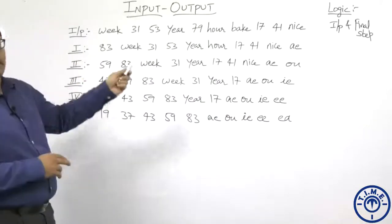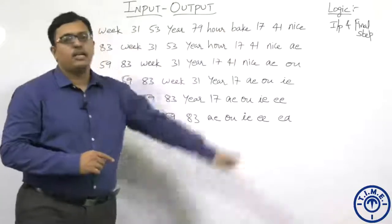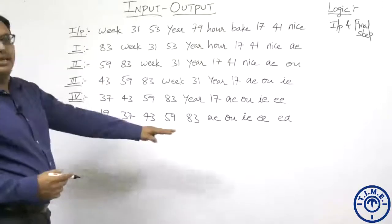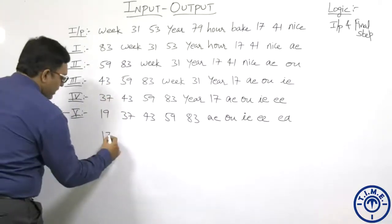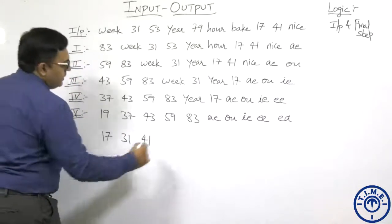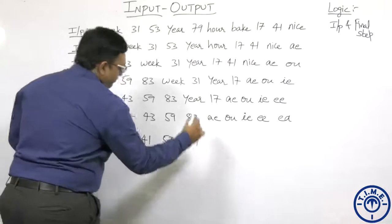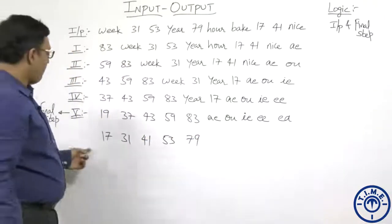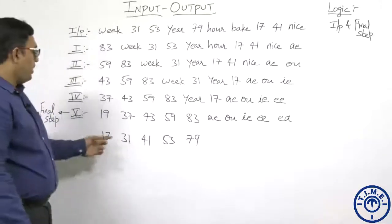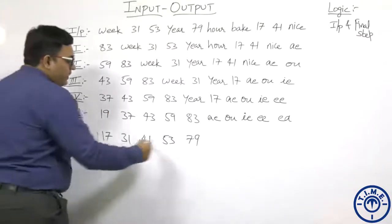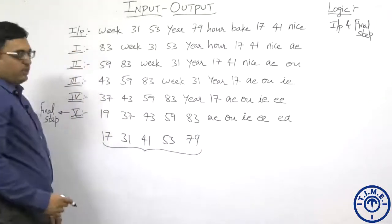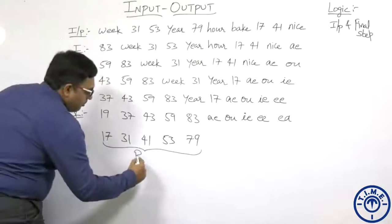Now, the numbers that are given in the output are not the same numbers given in the input. Since the numbers are arranged in ascending order, let me take only the numbers and arrange them: starting with 17, then 31, then 41, then 53, and then 79. The numbers in the output are totally different. One thing to observe is that all these numbers are prime numbers.